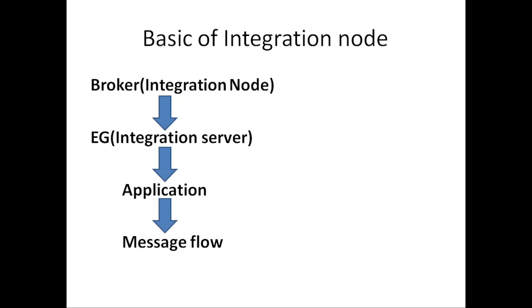The broker does all of this with the help of message flow. We create the flow inside the message flow, we can do transformations inside the message flow, and this message flow is present inside the broker. That is the reason broker has that capacity — because we define the storage capacity and all the properties inside the broker, and inside the broker we have the application and the message flow that can use the resources present inside the broker.